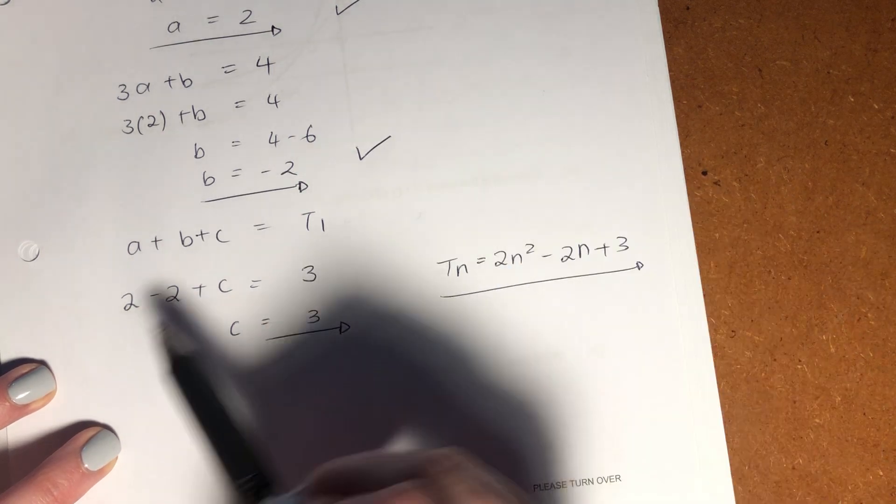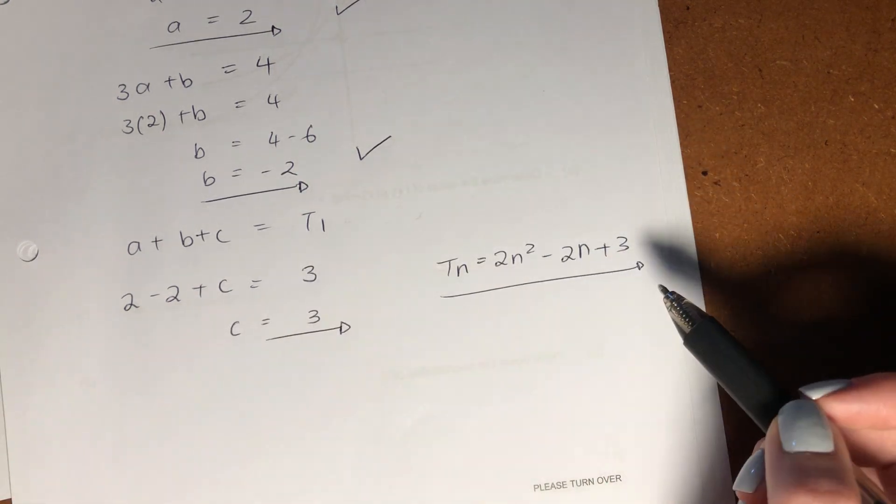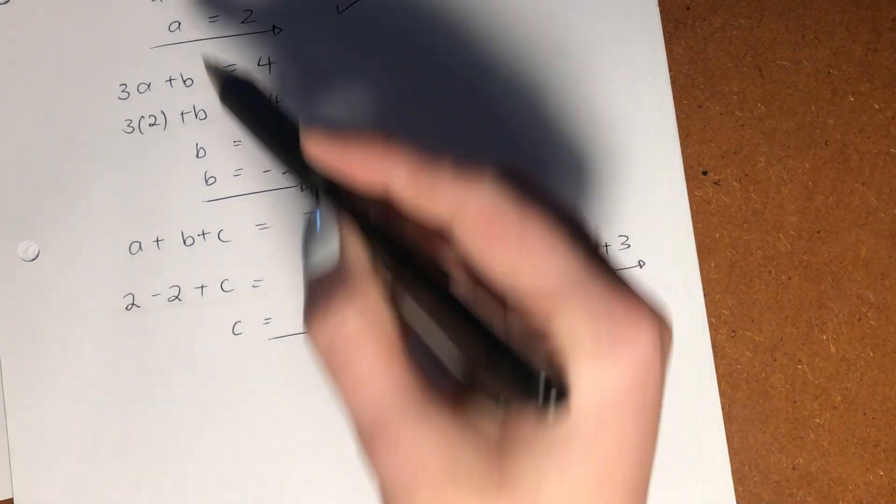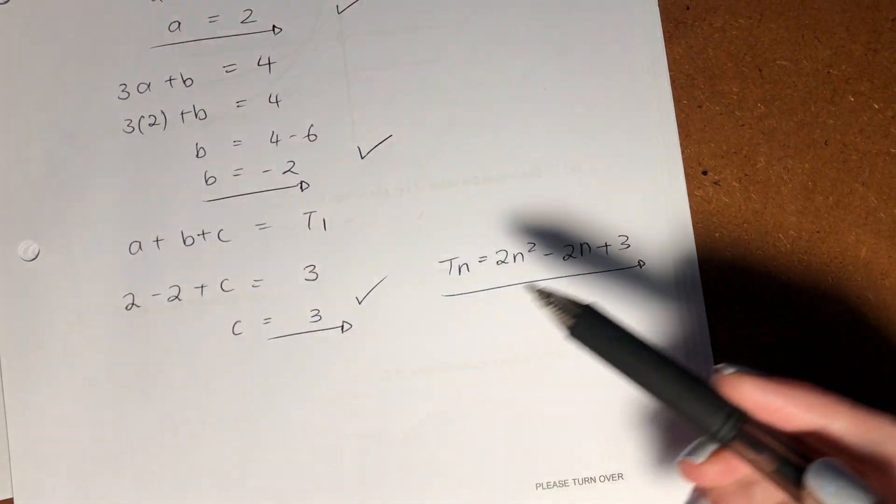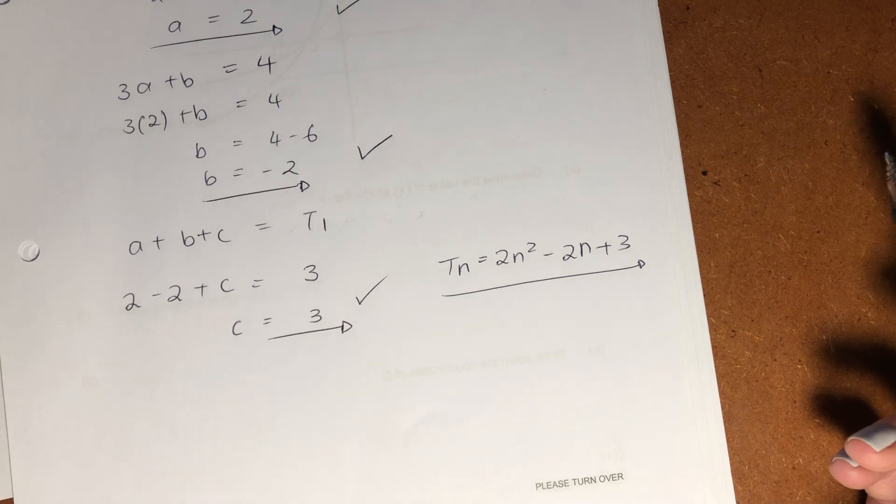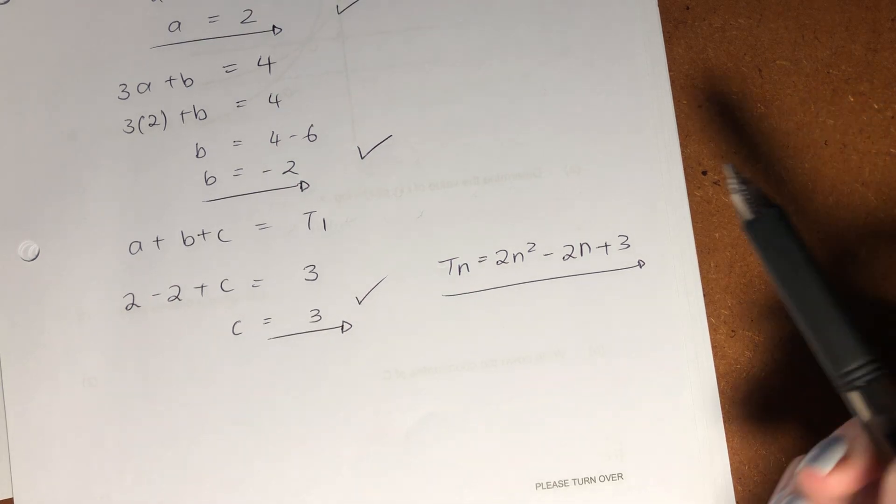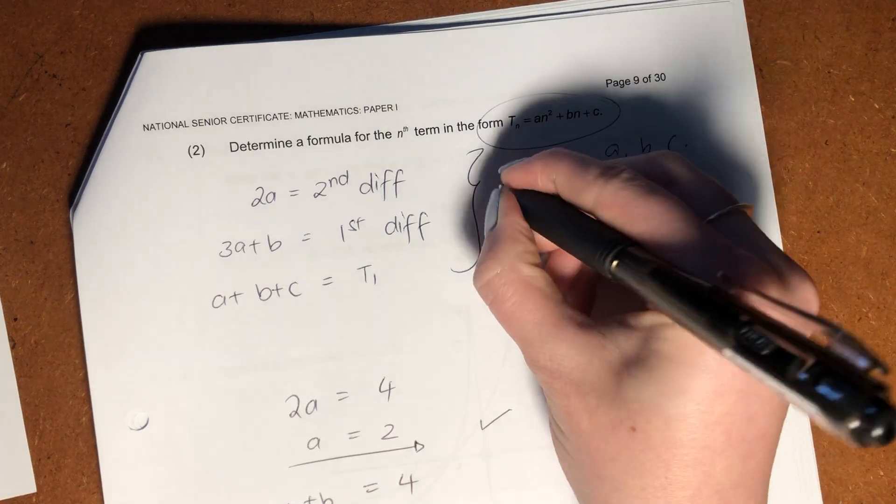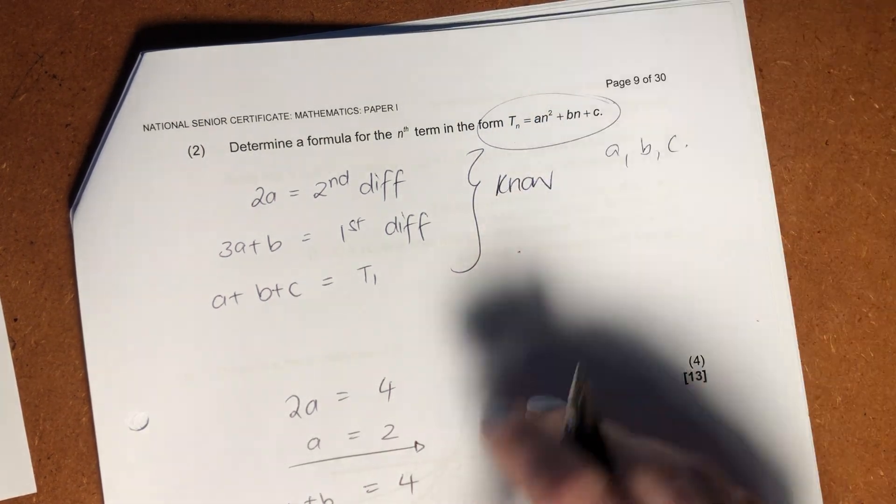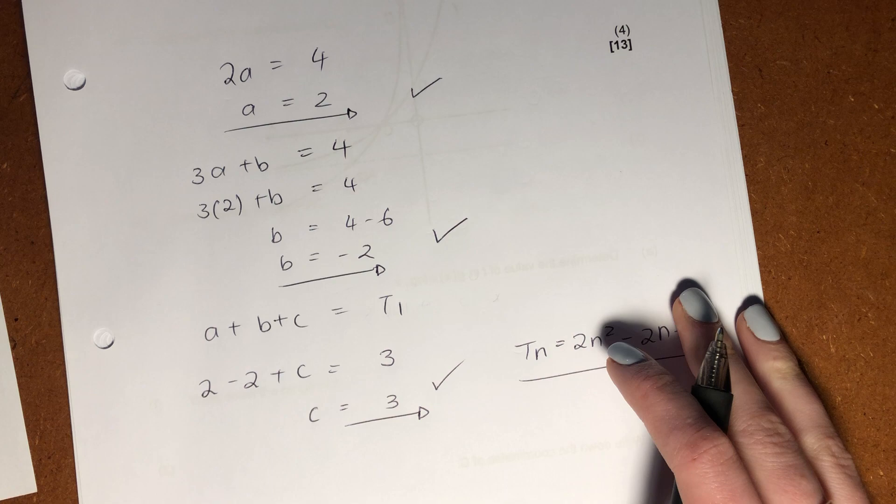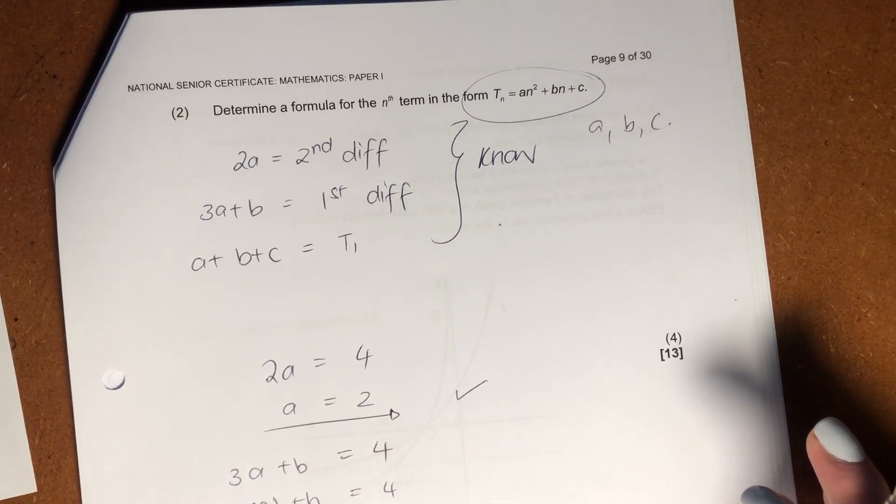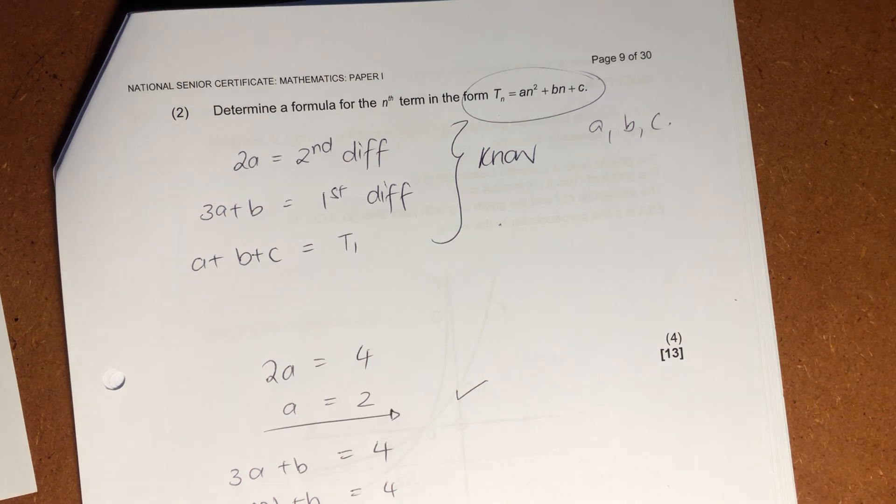Okay? You can go check this by plugging in, like, T1 and so on and just solving through. But this is a pretty foolproof way of going about getting a quadratic sequence. Okay? So, just be careful that you know these, because these are not given on your formula sheet. So, you need to know. Right? But once you know them, it's fairly easy to solve. Okay? As long as you know what I mean by the first difference, second difference, and T1. Right? Let's move on to our next question.